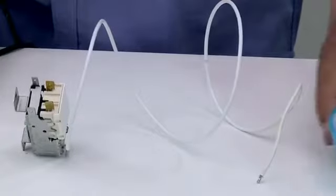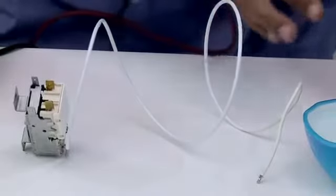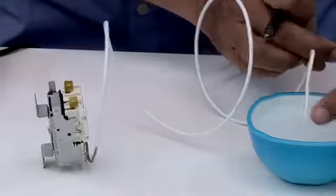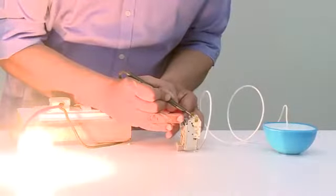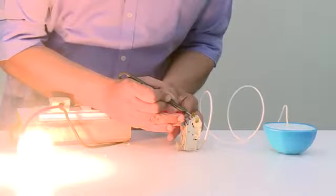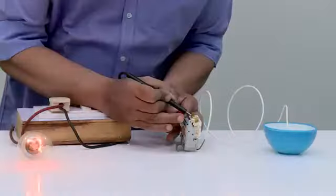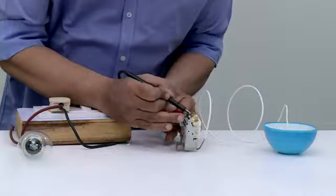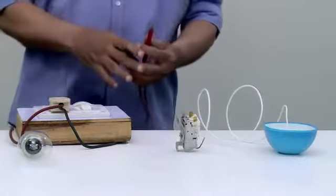We will now check cut-off operation of thermostat by inserting its sensing element into the crushed ice. When the set point temperature is attained, the bulb stops glowing. This shows that the thermostat is in working order.